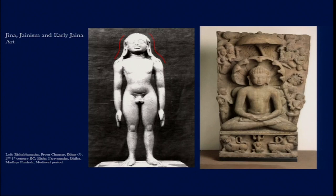There is also the Srivatsa sign, found around the chest area, which is considered a very important mark of divinity in the Jain context. These iconographical features help us understand how sculptures are made in the Jain context, as distinct from the Buddhist or Hindu context.